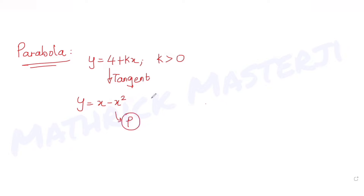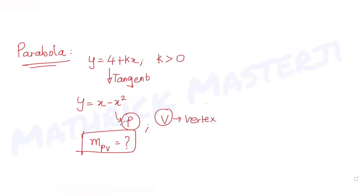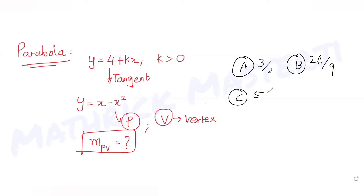V is the vertex of the parabola. We need to find the slope of the line through P and V. The answer choices given are 3/2, 26/9, 5/2, and 23/6. Let's figure out which one is correct.